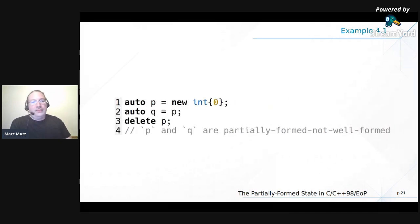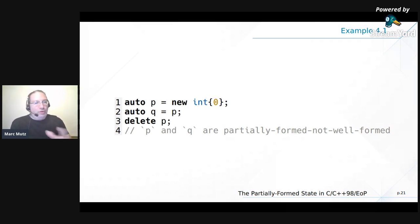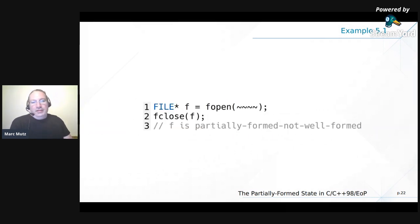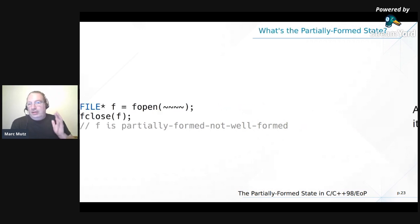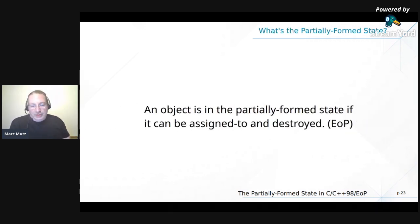Similarly, if you have a FILE* from fopen and you close it, suddenly the FILE* is Partially Formed — not well-formed. In all these cases, all you can do with the object is assign a new value from fopen or new, or destroy it — the objects are Partially Formed. There's yet another example from C++98: input iterators. If you have an input iterator that is not also a forward iterator, and you take a copy of it and advance the original, all you can do with the copy is assign to it or destroy it — you cannot read through it anymore.